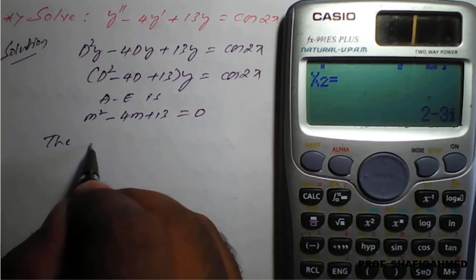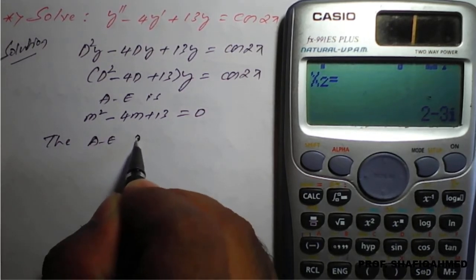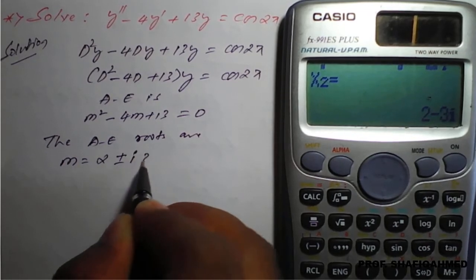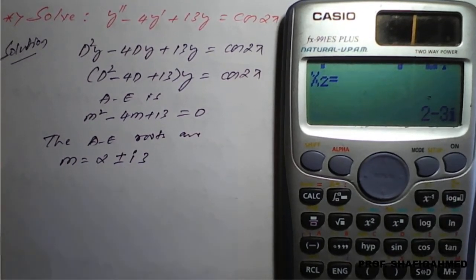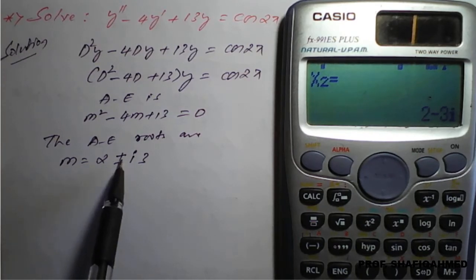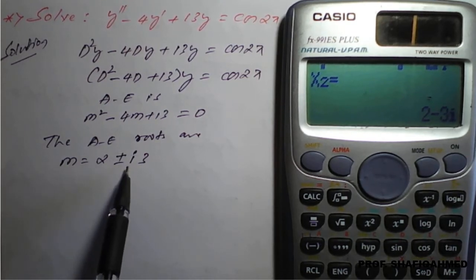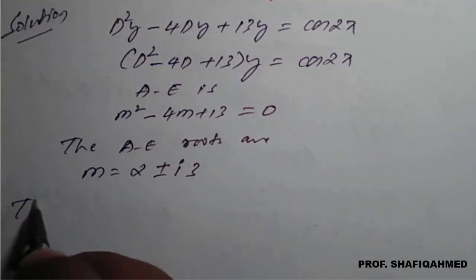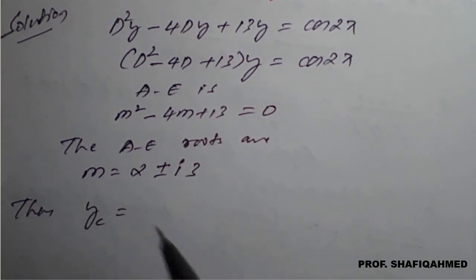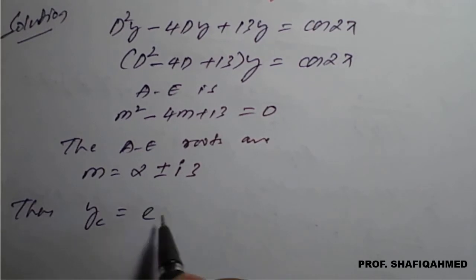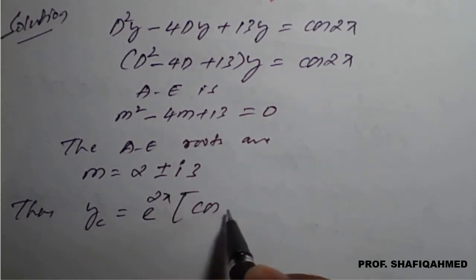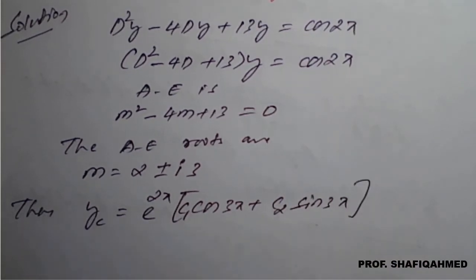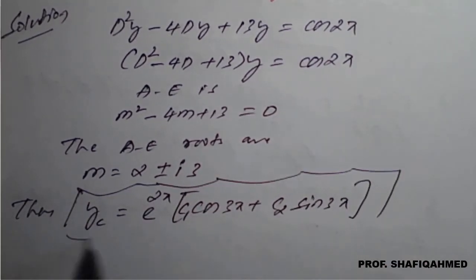The auxiliary equation roots are m equal to 2 plus or minus i3. We got two complex roots. The complementary function yc is therefore e raised to 2x into bracket c1 cos of 3x plus c2 sin of 3x, where 2 is the real part of the complex root.